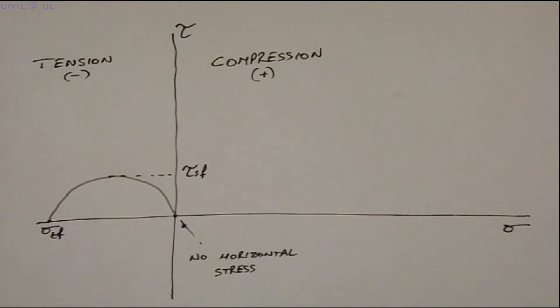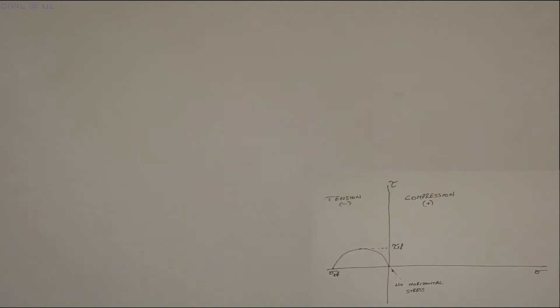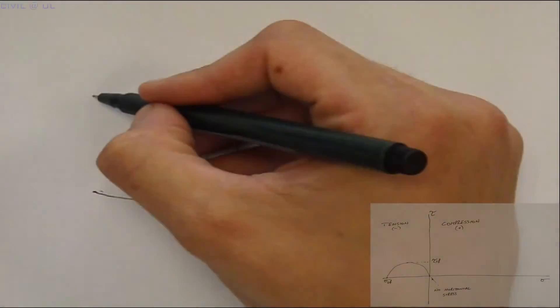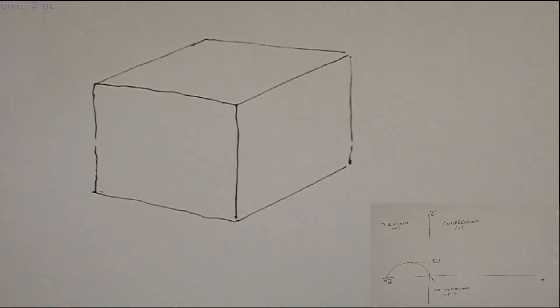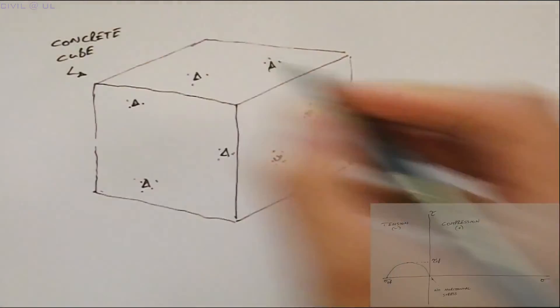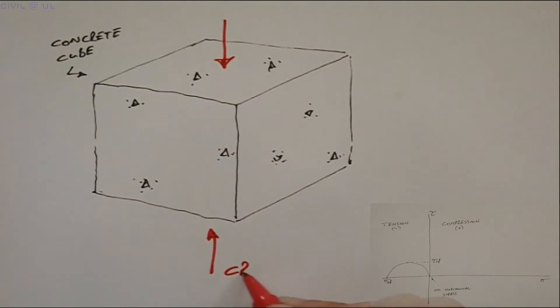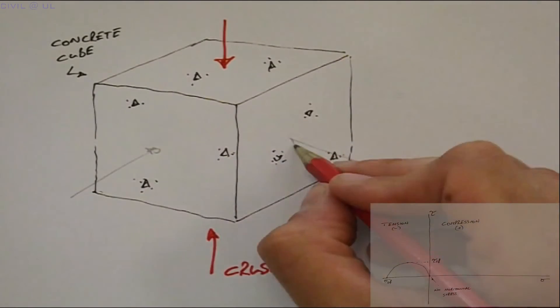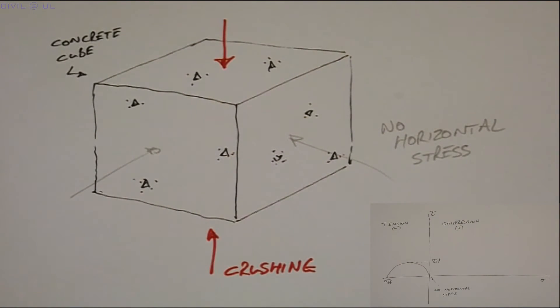Next, let's represent the strength of concrete. Like soil, concrete strength resides in its compressive capacity. So, strength tests are normally conducted by crushing cube or cylinder specimens. Again, these tests are conducted without the application of a horizontal confining stress, and so the strength is defined by the maximum compressive stress the sample can sustain.